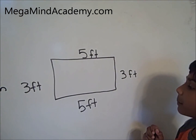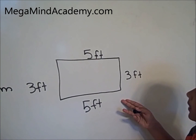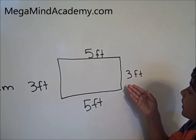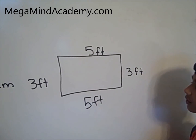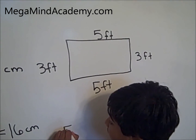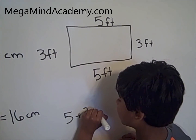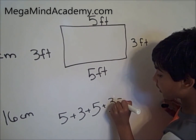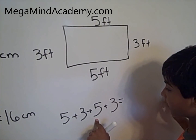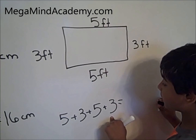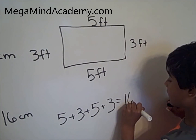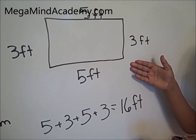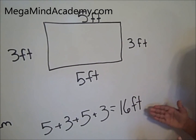In order to find the parameter of this rectangle, we need to add up all the 4 sides, meaning 5 plus 3 plus 5 plus 3. Let's write that down. 5 plus 3 plus 5 plus 3 equals — 5 plus 3 is 8, plus 5 is 13, plus 3 is 16 feet. So the parameter of this rectangle is 16 feet.